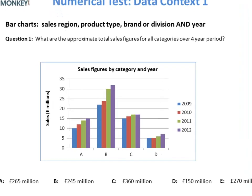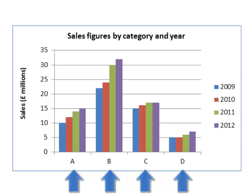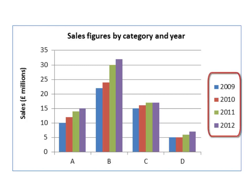Here is a graph showing historical sales for four categories of products A, B, C and D from 2009 through 2012. The sales data are given in millions of British pounds and the data for different years are given in different colors.